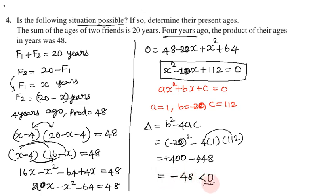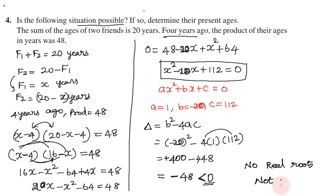The discriminant is less than zero, so there are no real roots. Therefore, the given situation is not possible.